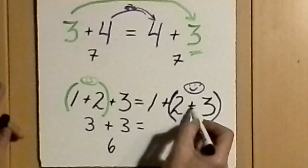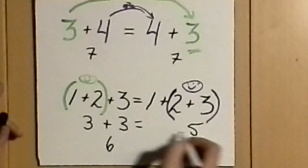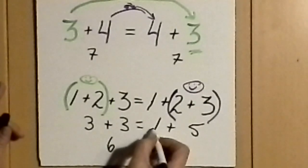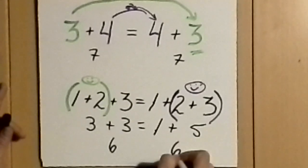In the second case, we see that 2 plus 3 is 5. Bringing down the 1 we had not yet accounted for, we have 1 plus 5, again, 6.